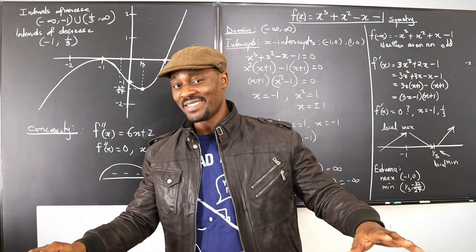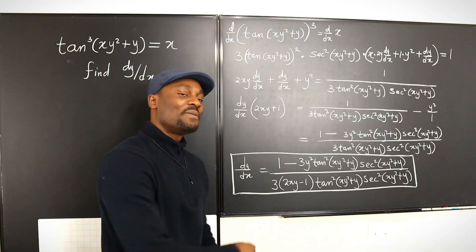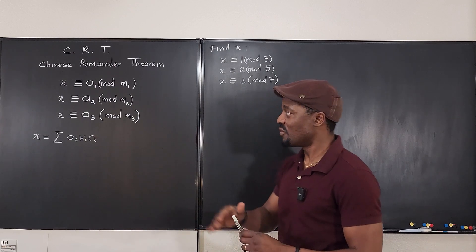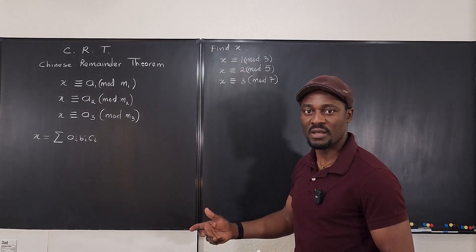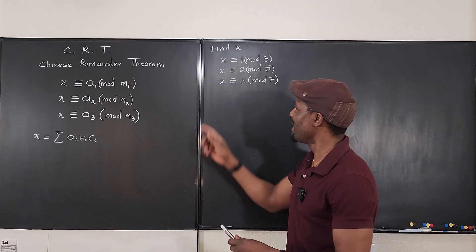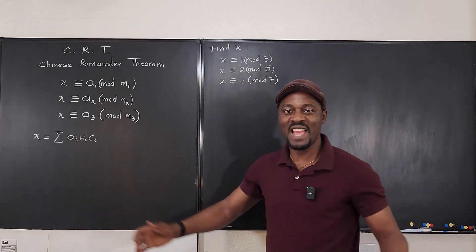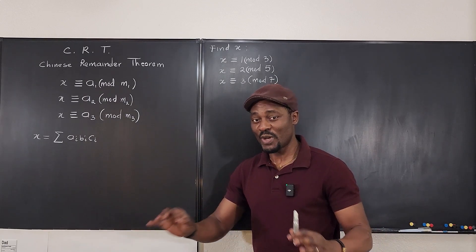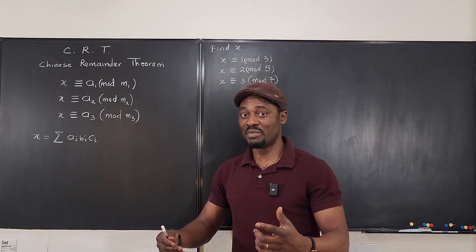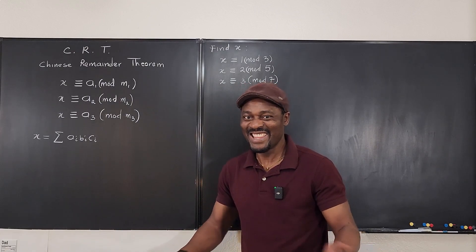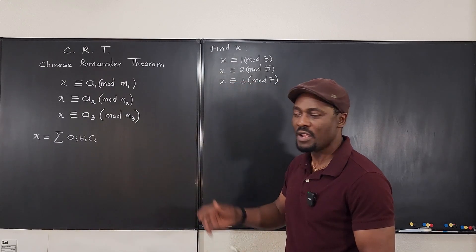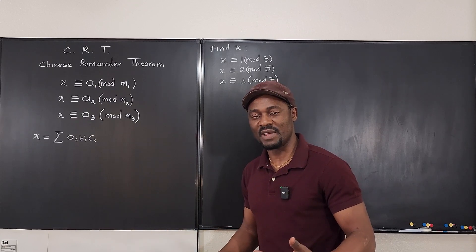The example problem can be written this way: when x is divided by three, the remainder is one — we say x ≡ 1 (mod 3). Similarly, x ≡ 2 (mod 5), and x ≡ 3 (mod 7). For example, 31 ≡ 1 (mod 10) because when 31 is divided by 10 the remainder is one. We write 31 = 3×10 + 1, where one is the remainder. That's the whole concept — and it was invented by the Chinese, which is why it's called the Chinese Remainder Theorem.